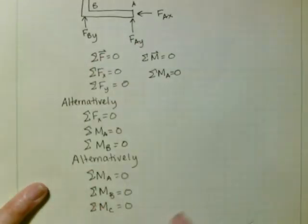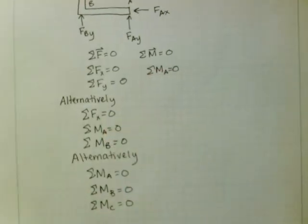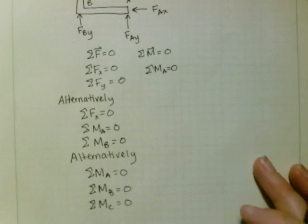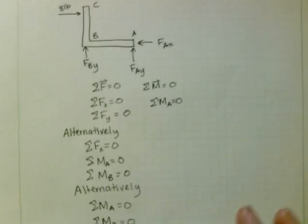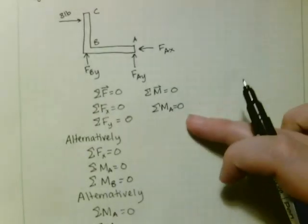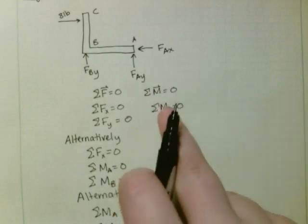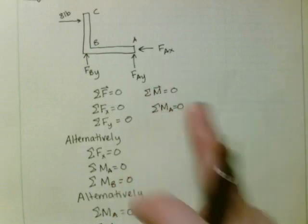So any of these 3 combinations are going to work. And it all depends on how the problem is laid out and what's easiest for you to solve. In the end, you should really be able to use any of these. But you usually want to start with this, because it's the easiest. Sum of the forces in the x, sum of the forces in the y, and sum of the moments about one point is going to find one of your unknowns.